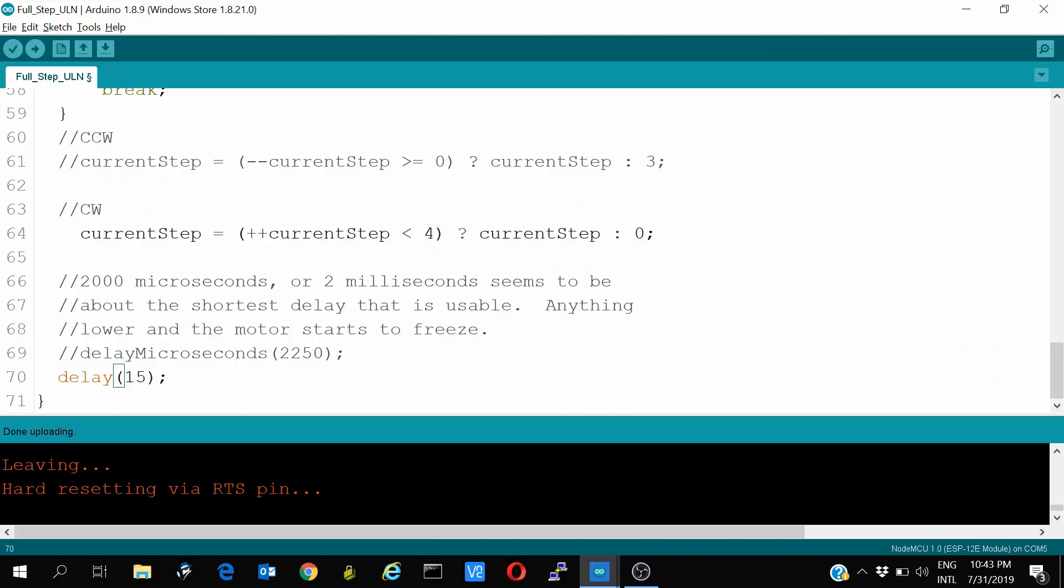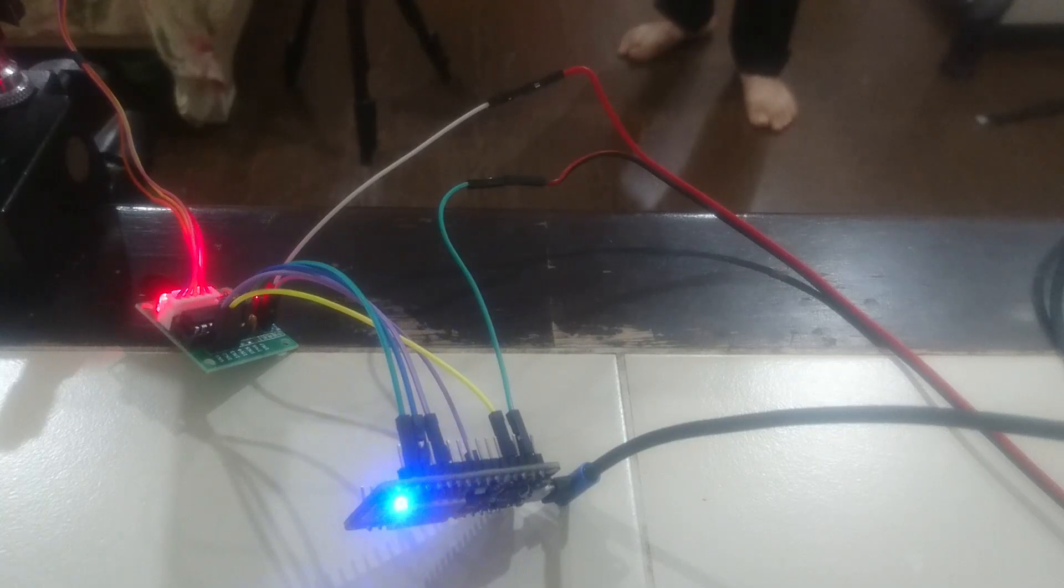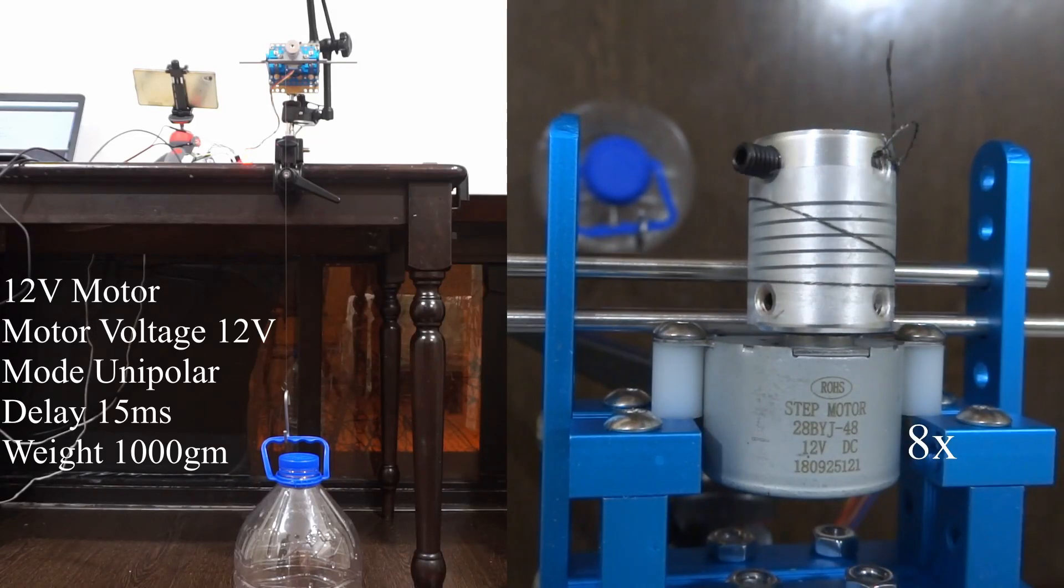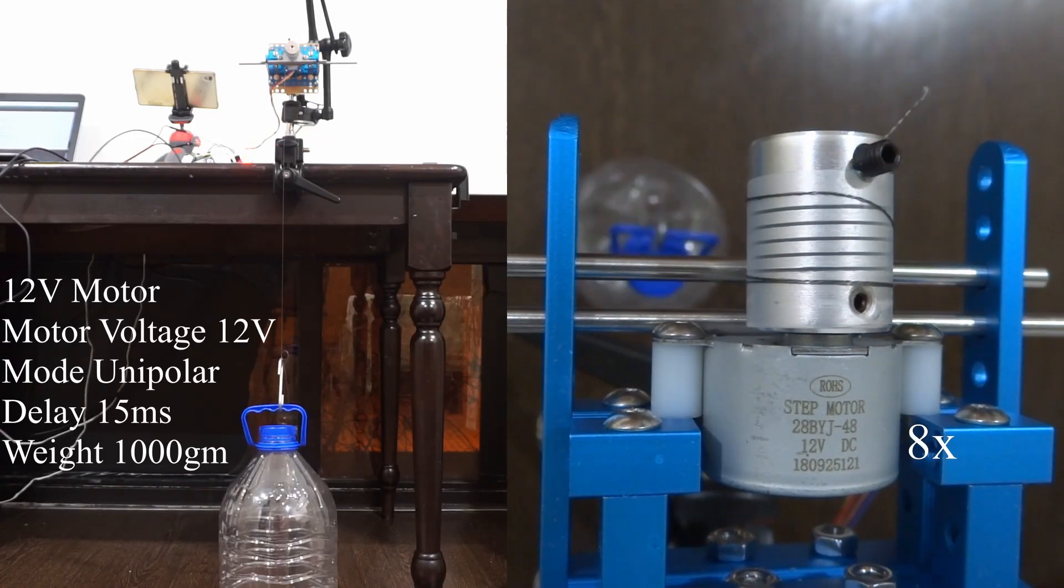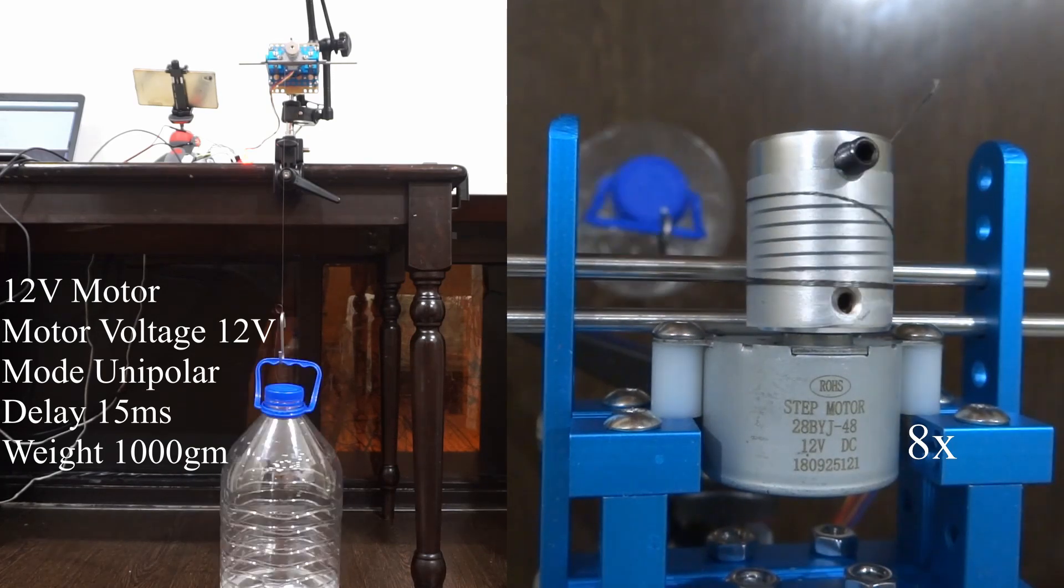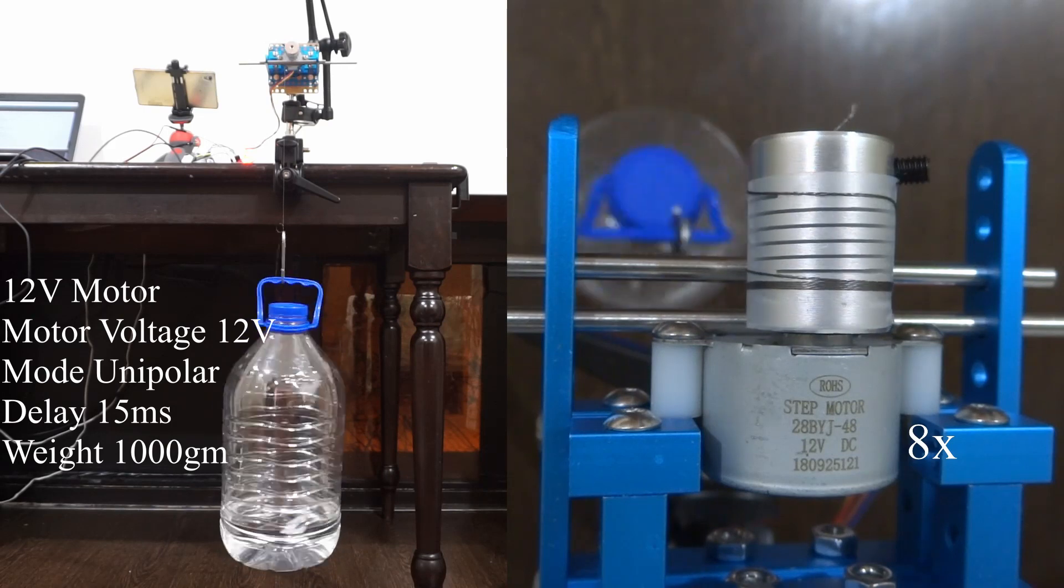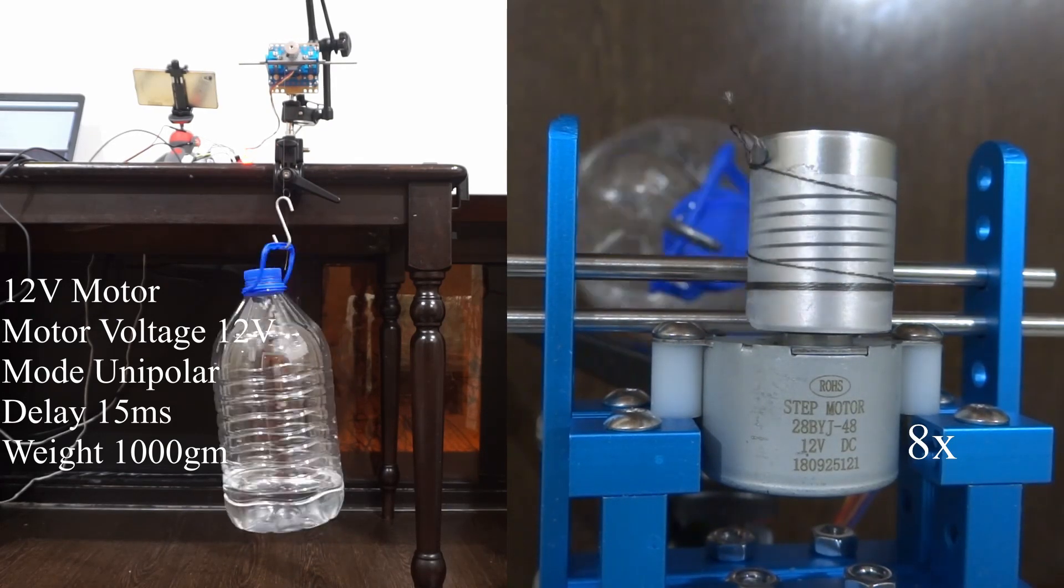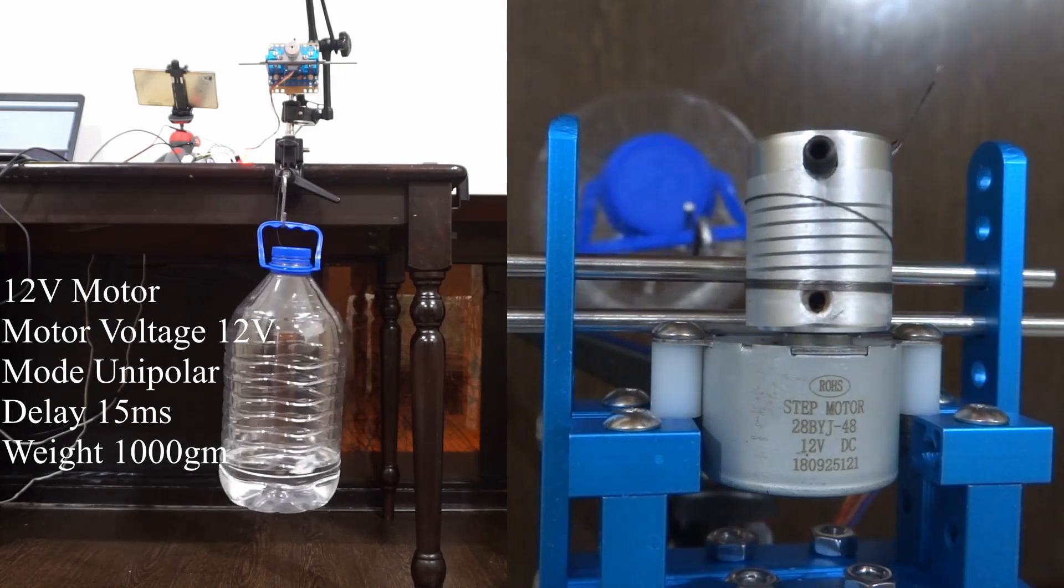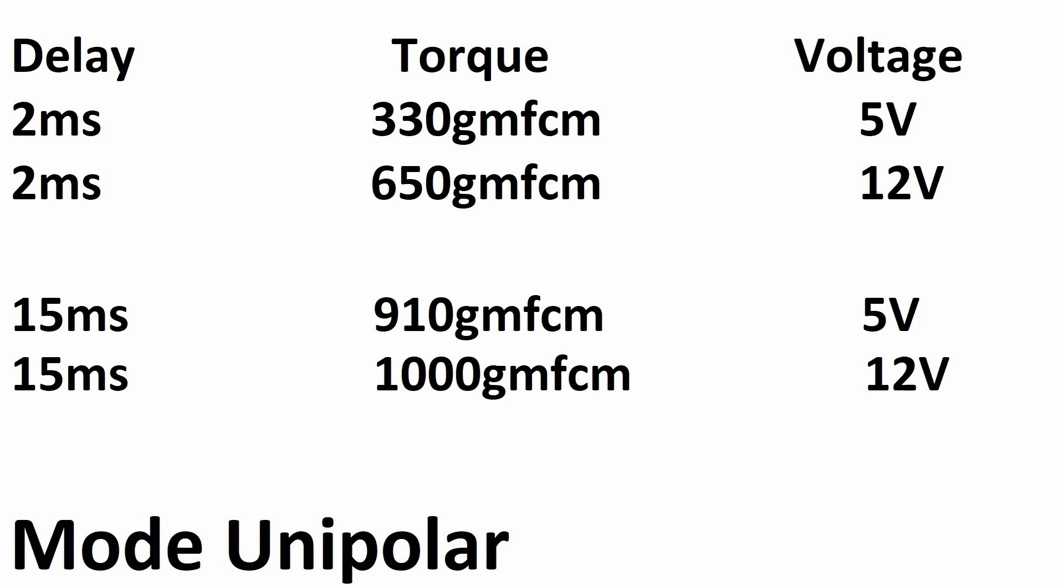Now let's set the code with 15ms step delay and see the torque. Again the setup is the same unipolar stepper driver with a 12V motor and 12V DC power supply. The weight of the bottle is 1kg. So now the torque is 1000 grams force centimeter. We can infer from this that the torque is doubling when the step delay is low but it is almost the same when the step delay is high. So you can't say with certainty that using 12V motor will double the torque. Now we will do the test with 12V motor in bipolar mode.